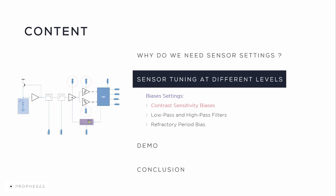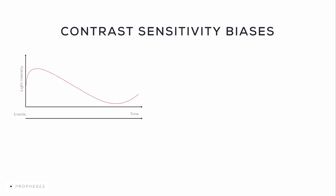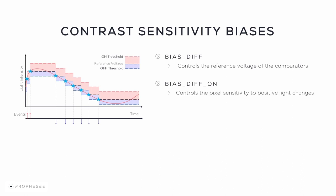Let's start with the bias settings, namely the contrast sensitivity biases. The main function of an event-based sensor is contrast detection. Each pixel detects temporal contrast changes autonomously and independently. An event is generated by a pixel when its comparator voltage crosses one of the contrast sensitivity thresholds — on or off, shown by pink and purple colors respectively. Once an event is generated, the pixel comparator voltage is reset to the reference value defined via the bias diff, and then the process of detecting a new contrast change repeats. We recommend keeping the reference voltage defined by bias diff unchanged. However, both on and off thresholds can be adjusted via bias diff on, which controls pixel sensitivity to positive light changes, or bias diff off, which controls sensitivity to negative light changes.